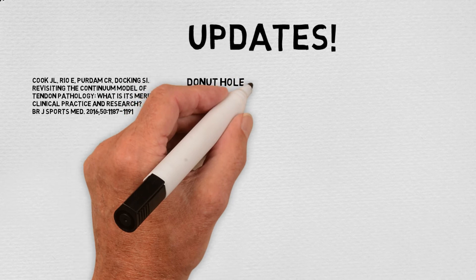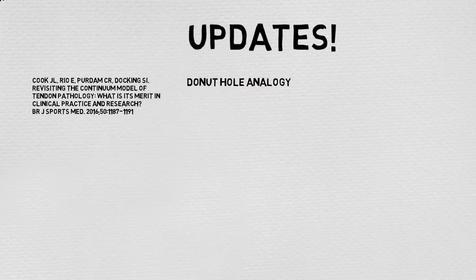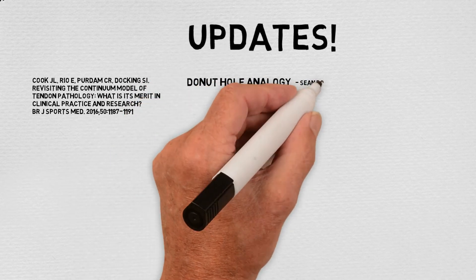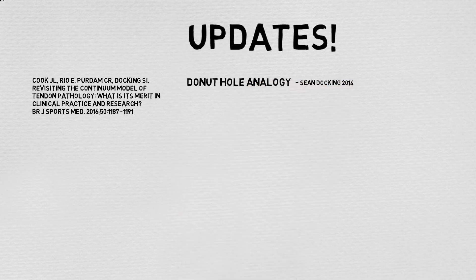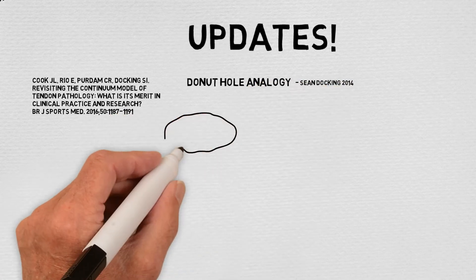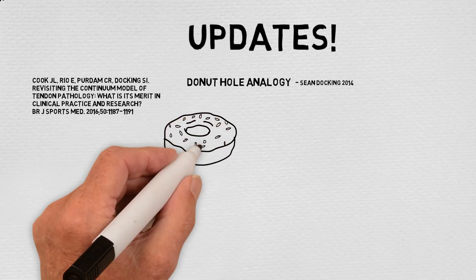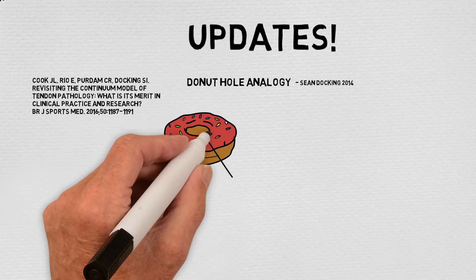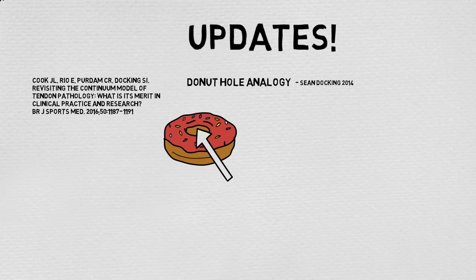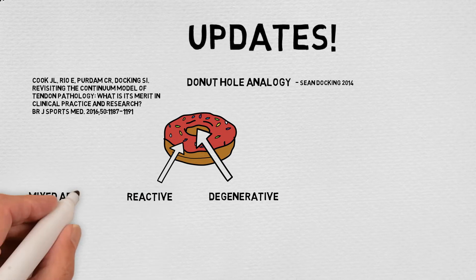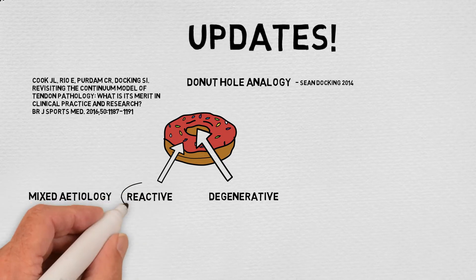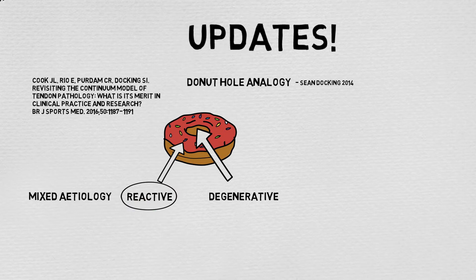In this, they emphasise the donut hole analogy first suggested by Docking in 2014. This is the idea that while we have a continuum of tendinopathy, not all of the tendon is going to be in the same state at the same time. While we may have a small degenerative hole that has lost capacity to transfer load, the rest of the tendon will be in varying states along the continuum. In this update, they coined the term 'reactive on degenerative tendinopathy' to emphasise that the state of the tendon is fluid.